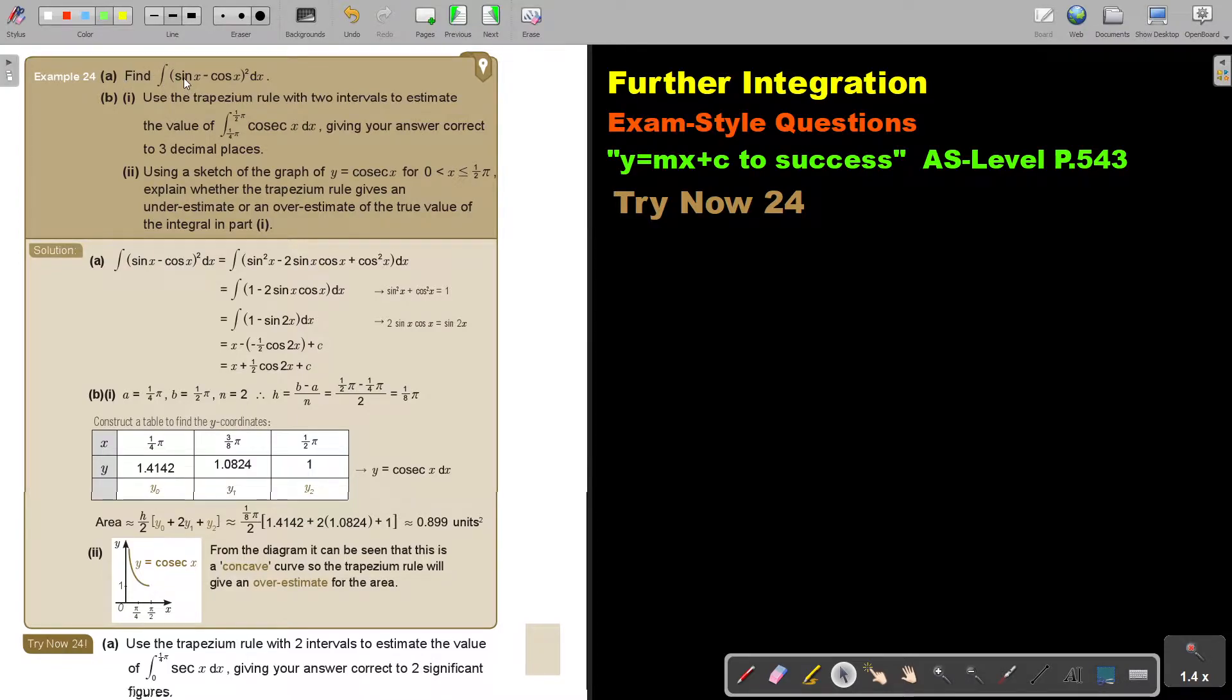Let's look at another example. Find the integral of sin x minus cos x squared. Always, as soon as I see square, write the brackets two times or just square the first one, multiply with each other. Otherwise, if you struggle, then write the two brackets out and just multiply it.